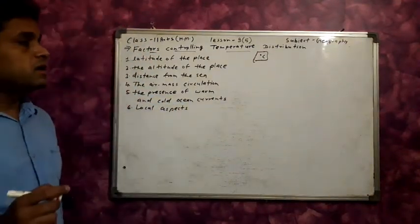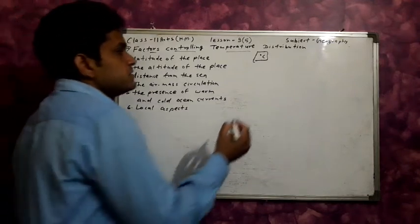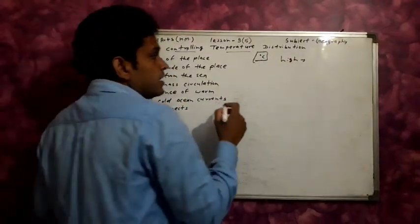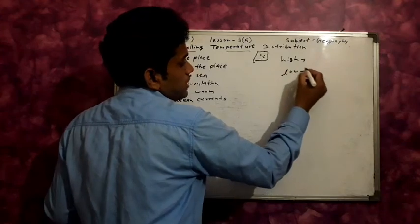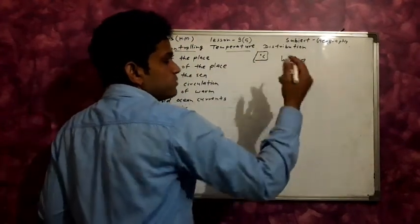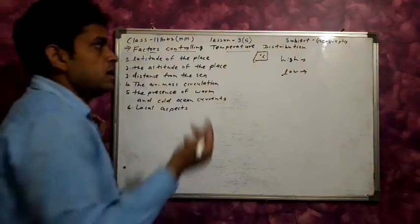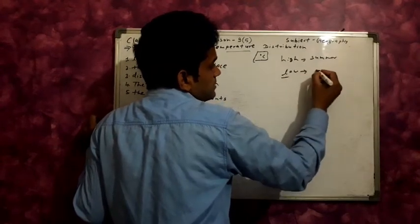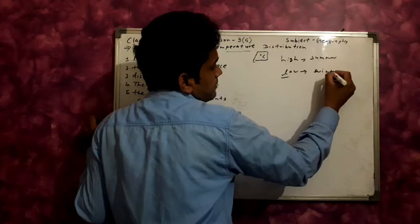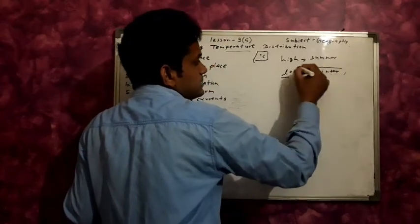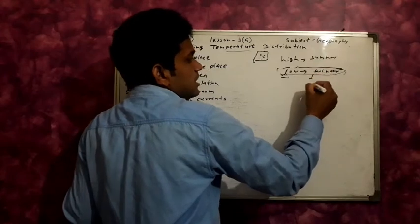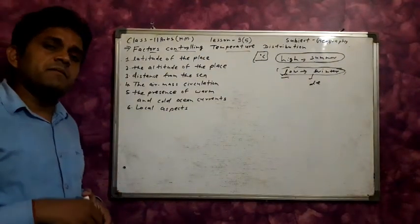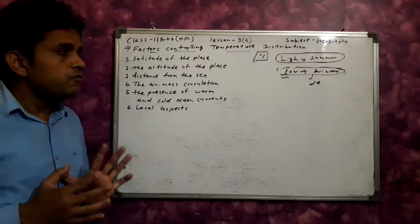When temperature is high — approximately 1, 2, 3 degrees — and then drops to 0 degrees or minus 2 degrees, that is low temperature. When temperature is high, the time is summer. When temperature is low, the time is winter. In winter, temperature decreases; in summer, temperature is high.